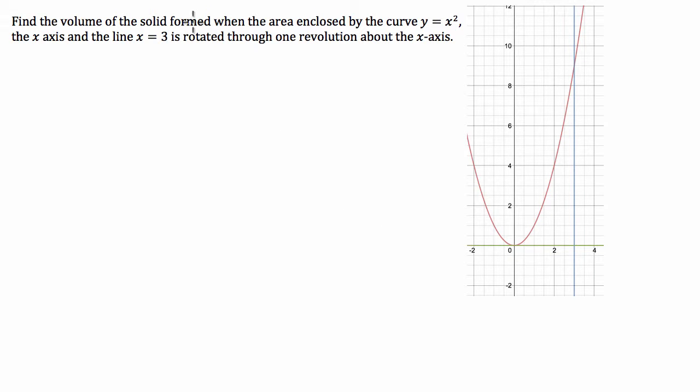we have to find the volume of the solid formed when the area enclosed by the curve y equals x squared (the red one), the x-axis and x equals 3, is rotated through one revolution about the x-axis. So this area enclosed by these three lines, the scribbly area, is the area that we're going to have to rotate around the x-axis.